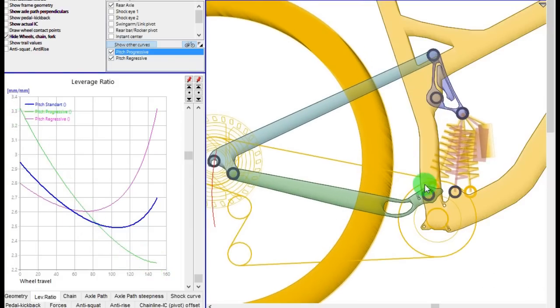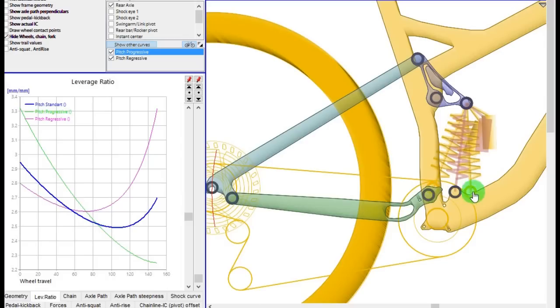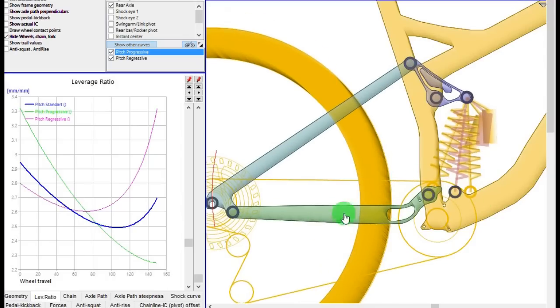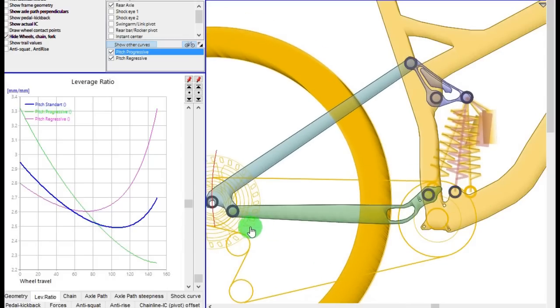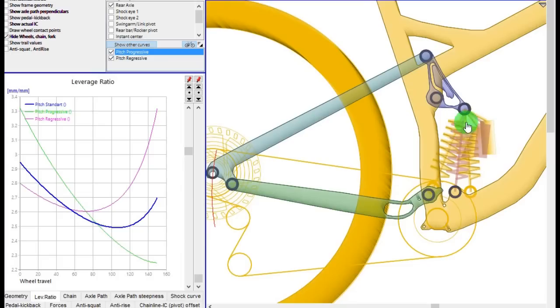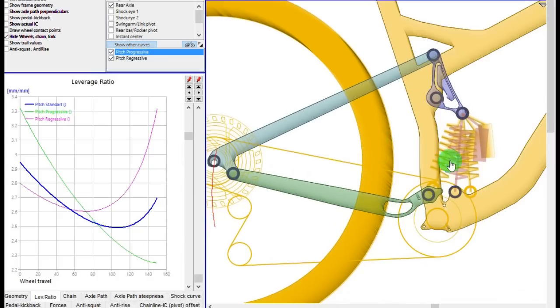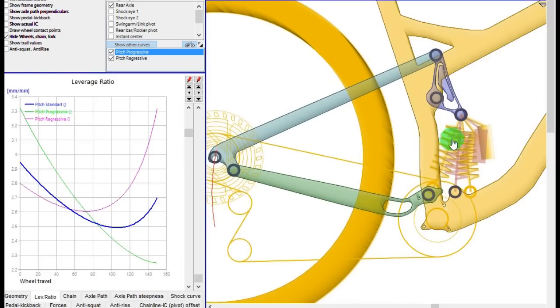This means that you have a super, super progressive bike. As you can see, by changing just a little bit the shock pivots, you pass from a very regressive and shitty bike to a very progressive and very aggressive bike.